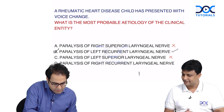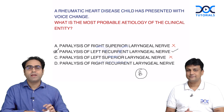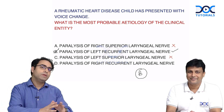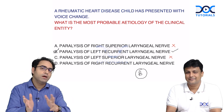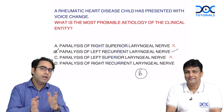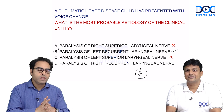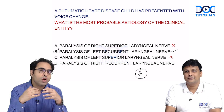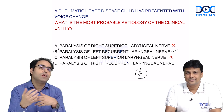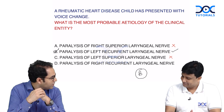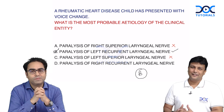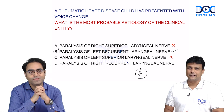The answer to the original question is B — the left RLN. This is the beauty of integration: if you are clear about your anatomy and how the right and left recurrent laryngeal nerves differ in their course, you can interpret a wide range of clinical situations. Thank you very much. Keep learning.